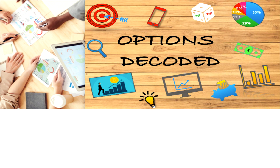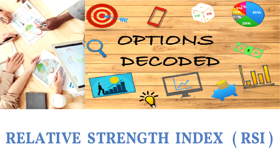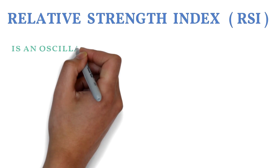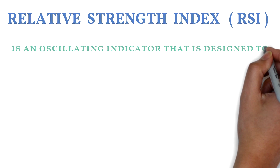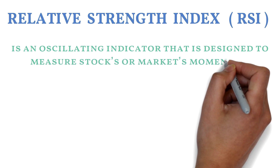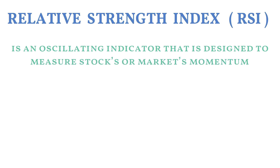Hi friends, welcome back. Do you know how awesome it is to be technically sound in the markets? Let's begin this weekend with one of everyone's favorite and fairly easy indicators. Yes, you guessed it right — RSI. The relative strength index, or RSI, is an oscillating indicator designed to measure a stock's or market's momentum, which is both the speed and size of price changes.